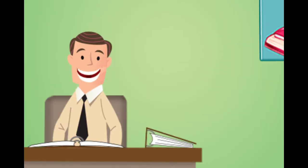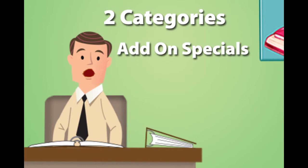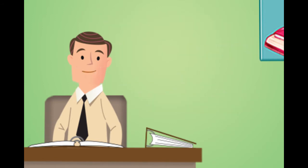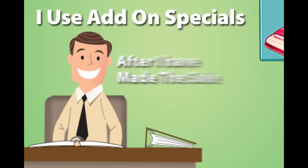Okay, I divide our specials into two categories: add-on specials and closing specials. For example, the buy one get one free vacuum cleaner bag special is an add-on. It will add an additional $9.99 to my sale. I use the add-on specials after I've made the sale.